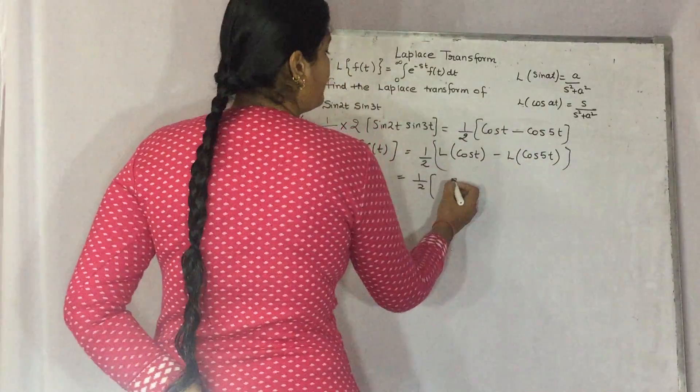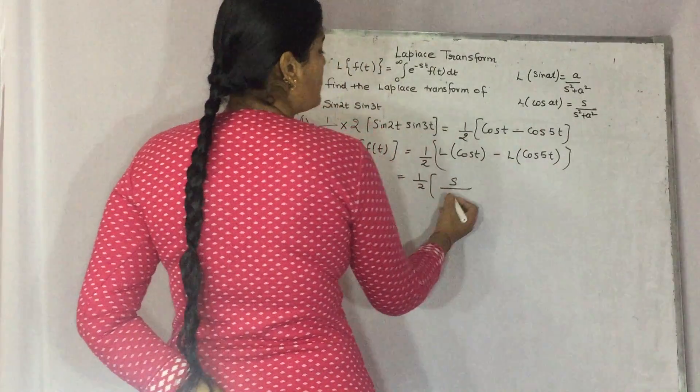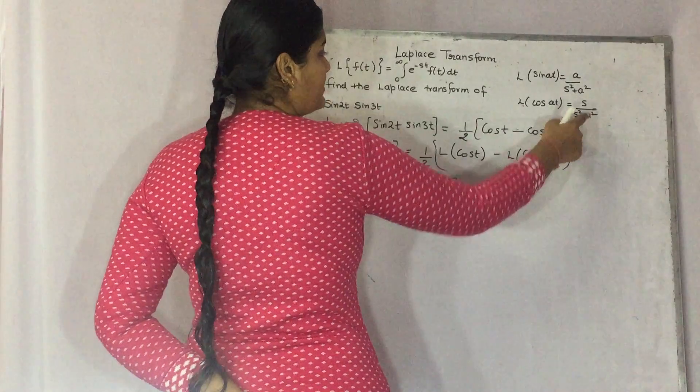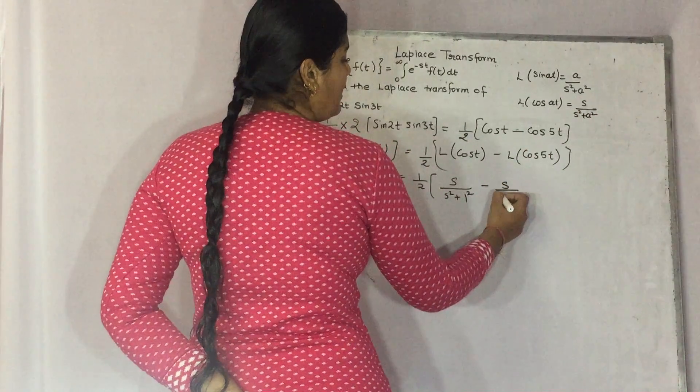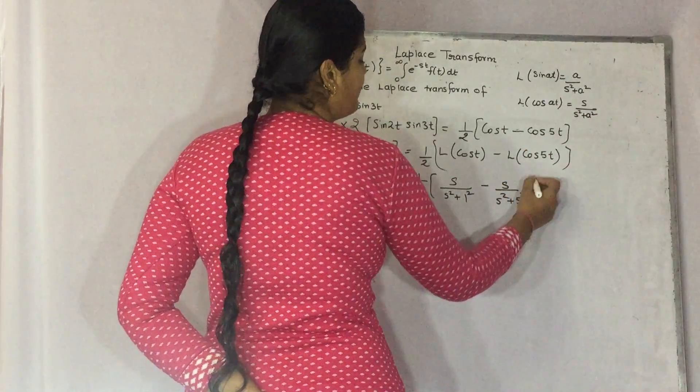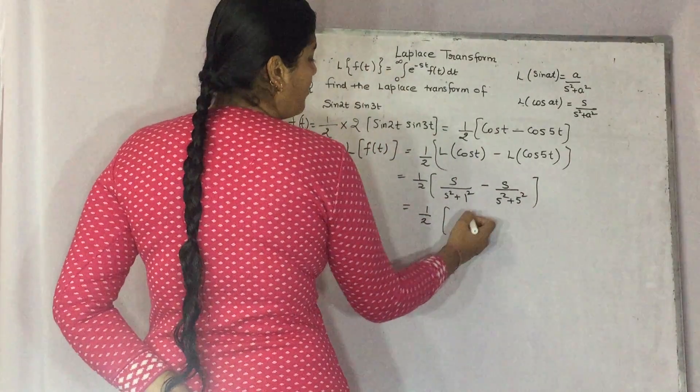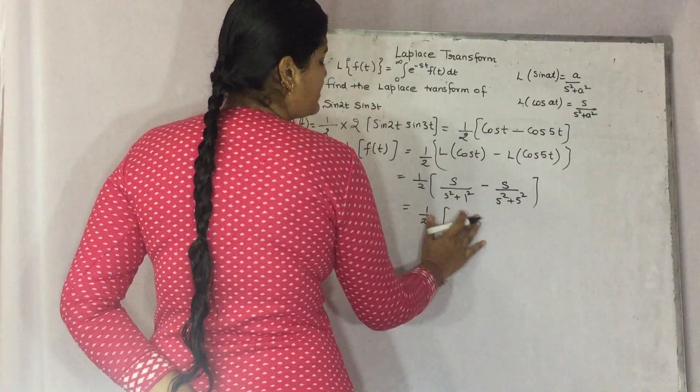So the formula becomes s over s square plus a square. a is 1 here, minus s over s square plus a square, which is 5 here. So half of, you can take s as common.